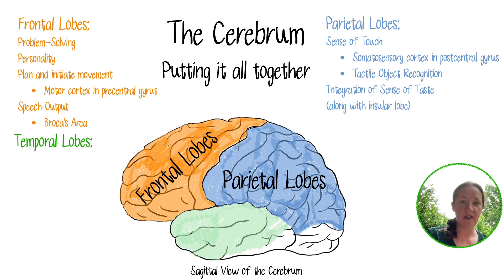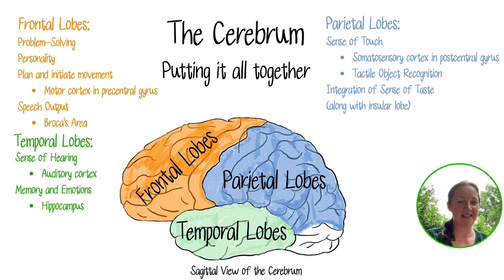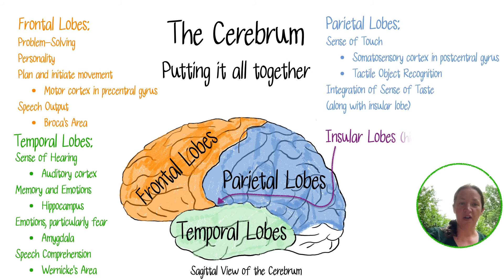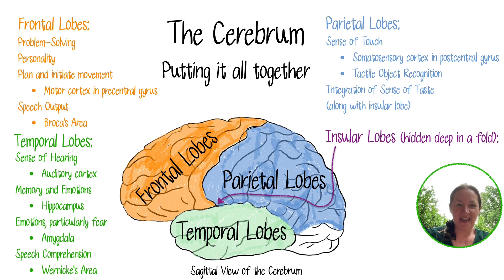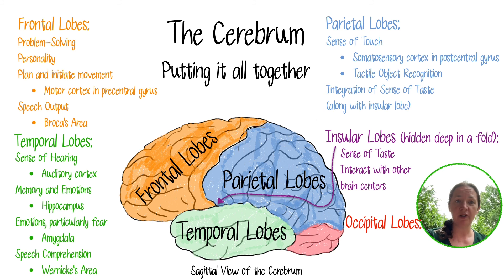The temporal lobes process your sense of hearing through the auditory cortex. They're famous for their role in memory and emotions, particularly because they contain the hippocampus and the amygdala, which is important in fear responses. Speech comprehension is located in a lateralized part of the temporal lobe called Wernicke's area. The insular lobes are hidden deep in a fold and process your sense of taste, while also interacting with other brain centers to help with language, sensation, and emotions. Finally, the occipital lobes process your sense of vision through the visual cortex.